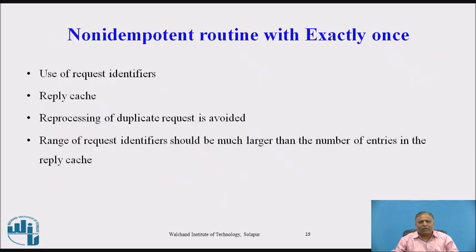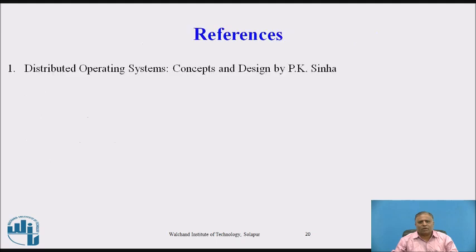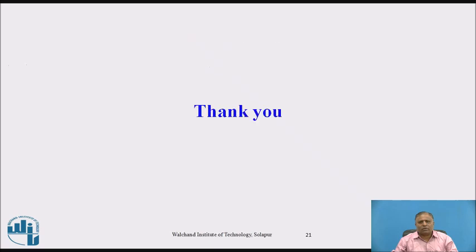Using the non-idempotent routine with exactly-once semantics, we use the request identifier and reply cache. Reprocessing of a duplicate request is avoided. The range of request identifiers should be much larger than the number of entries in the reply cache. These are the references. Thank you.